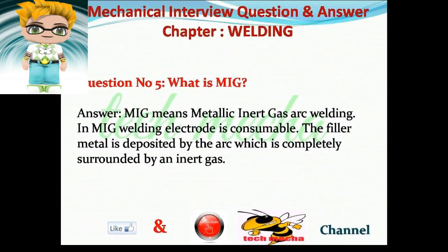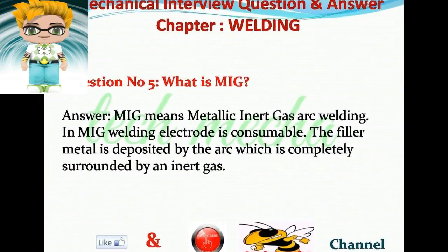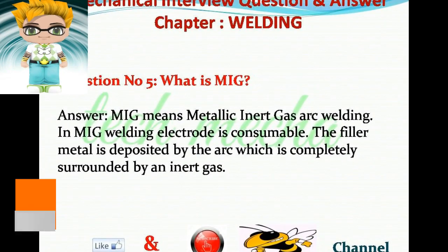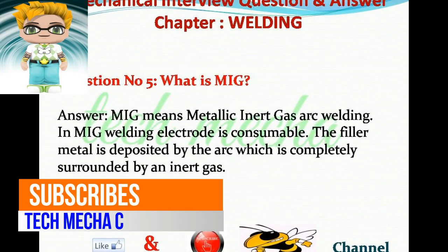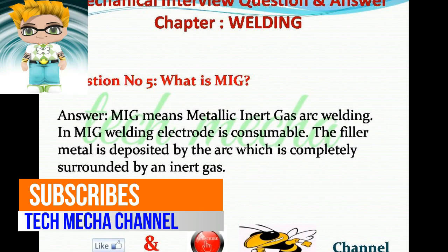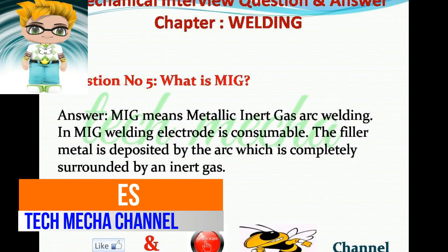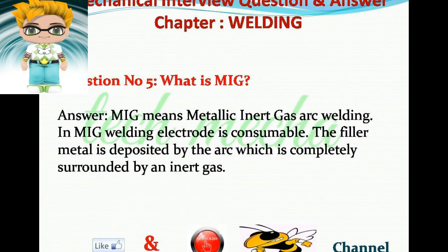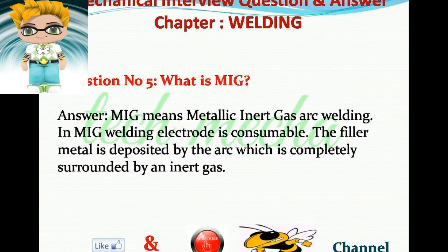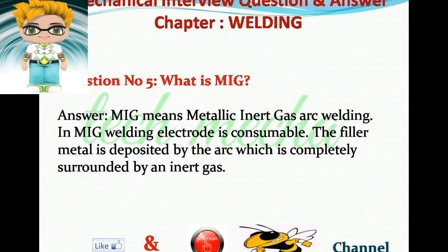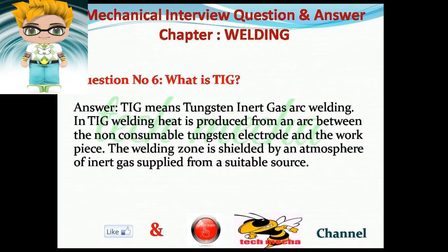Question number five: What is MIG? Answer: MIG means Metal Inert Gas arc welding. In MIG welding the electrode is consumable. The filler metal is deposited by the arc, which is completely surrounded by an inert gas.